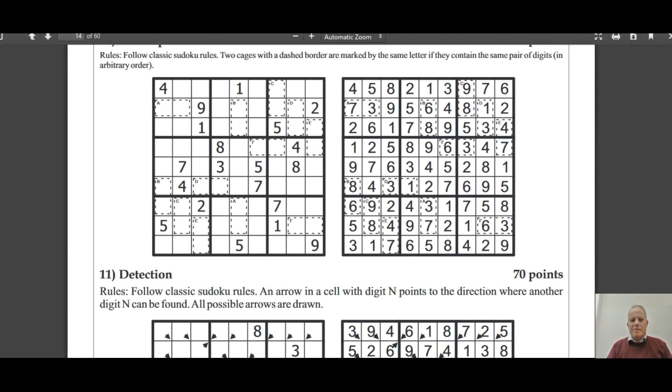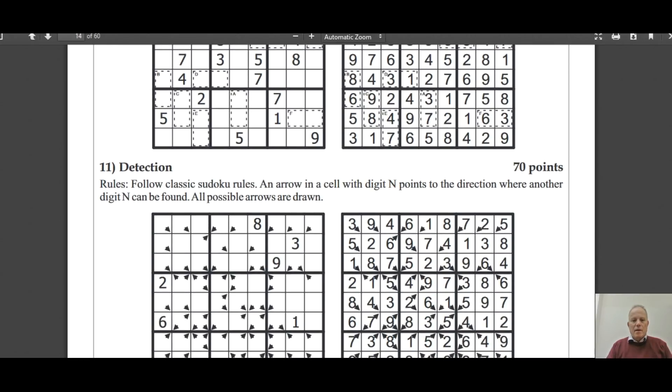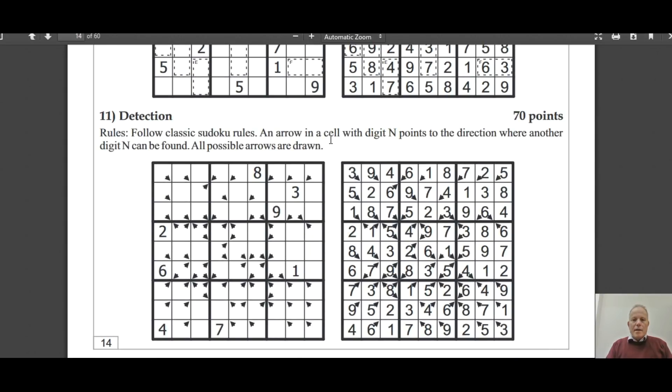Detection - this looks monstrous to me. An arrow in a cell with digit N points to the direction where another digit N can be found. So if there's an arrow in a cell with a number in it, there must be another of those numbers in that diagonal proceeding down that direction. That's really weird. So few givens - very difficult to solve in my opinion. With a lot of these, if you can get the start, often they're all about getting the start. In the actual competition, do have a go at that if you want.